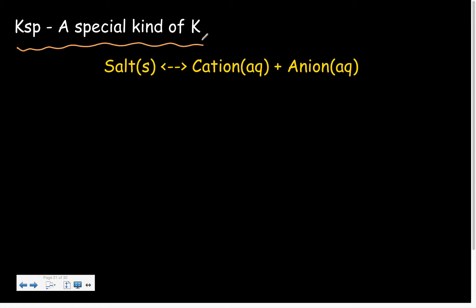Ksp is a special kind of K, where the sp means solubility product constant. When we say Ksp, we're talking about the equilibrium constant, but more specifically the solubility product constant. Same idea, though — K is an expression of basically the amount of product raised to their coefficients over the amount of reactant raised to their coefficients, except that it corresponds to a specific situation.